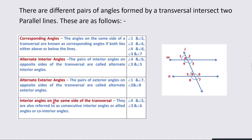Next are interior angles on the same side of the transversal, also called consecutive interior angles, co-interior angles, or adjacent angles on one side. Angle 3 and angle 6 are co-interior angles, and angle 4 and angle 5 are co-interior angles. The property is: the sum of co-interior angles is always 180 degrees. That is, angle 3 + angle 6 = 180°, and angle 4 + angle 5 = 180°.